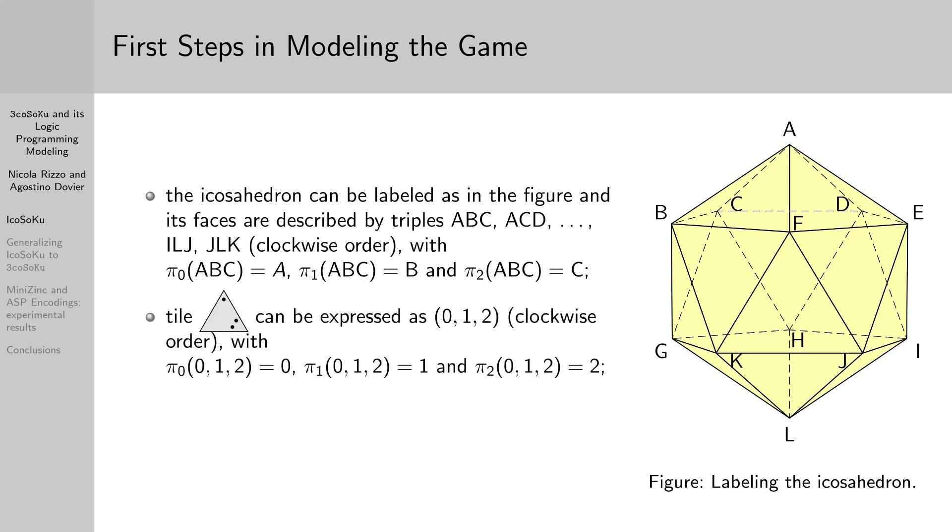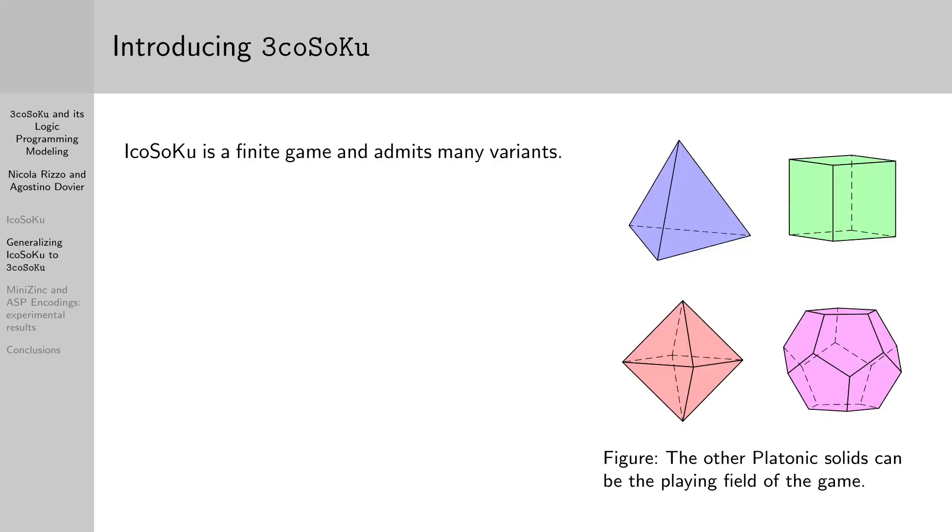Similarly, tiles can be expressed as triples of integers by reading the number of black dots in clockwise order. We also use pi0, pi1, and pi2 to get the numbers of black dots of a tile, and we encode the possible clockwise rotations of the tiles with 0, 1, and 2. Since the number of different ways the pegs can be arranged is finite, Icosoku is a finite game.